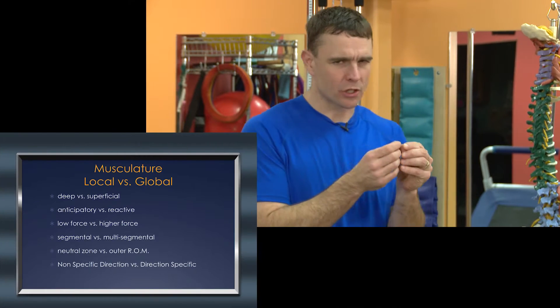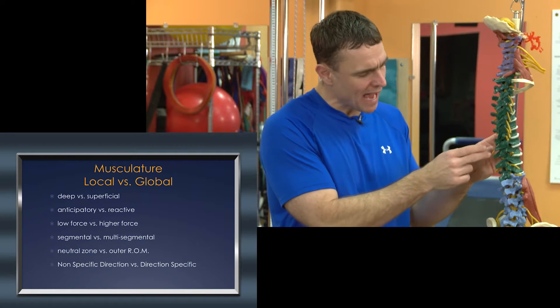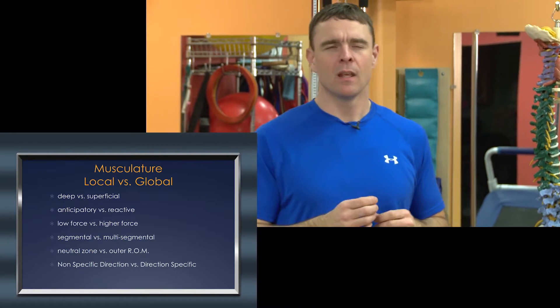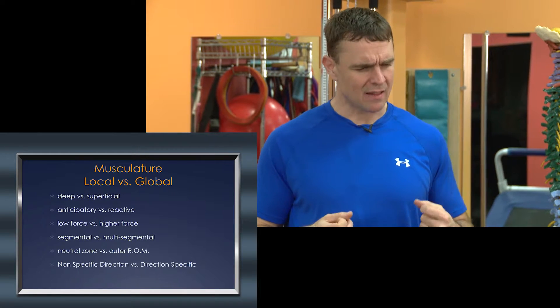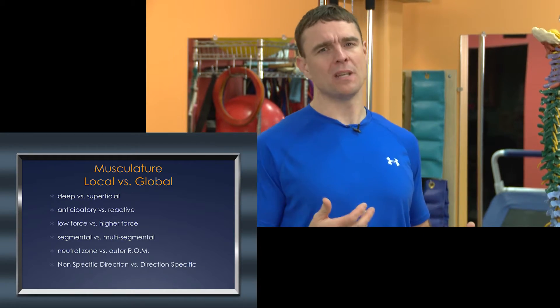We have the concept of local musculature versus global musculature. Local musculature tends to be deep — like the rotatories or the lumbar multifidi — running joint to joint or small segment to small segment. These muscles are anticipatory in nature with a feedforward mechanism, activating before movement actually engages. The global musculature is further away, multi-joint, more superficial, and reactive to what's happening.